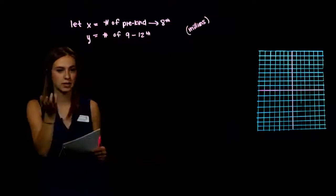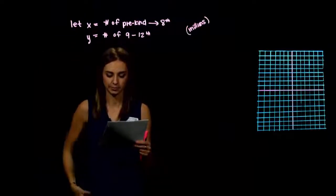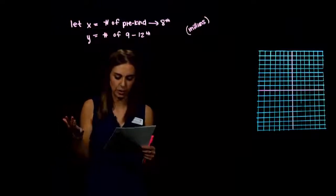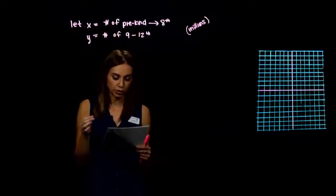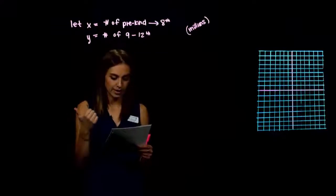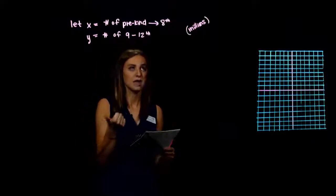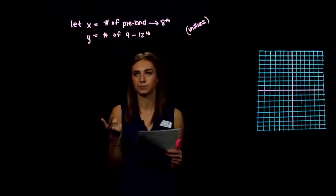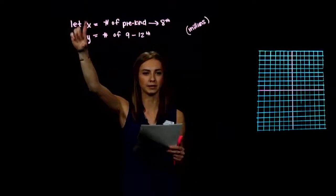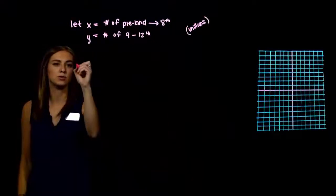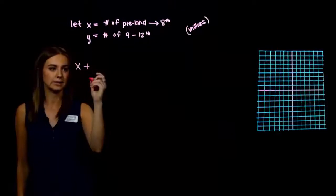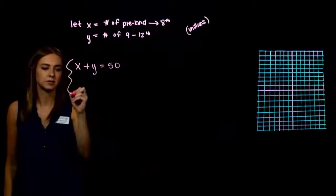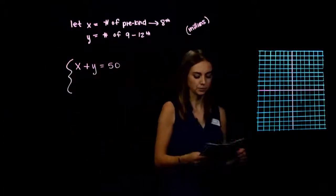We need two equations in a nice form, but let's build them first. The first line tells us approximately 50 million children were enrolled in both elementary and secondary schools — so K through 8 and 9 through 12 together totaled 50 million. With our variables, we write: x plus y equals 50. We have one equation; we need the other for the system.